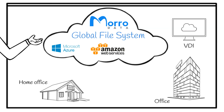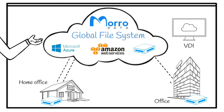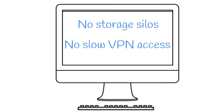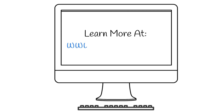All users in different offices see files organized in shares with designated version policies. All data is stored with encryption on Amazon S3 and accessed with cache drive local cache performance. There are no more storage silos or slow VPN access between offices.